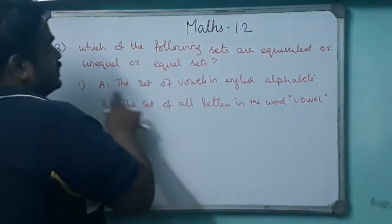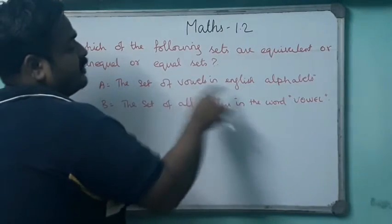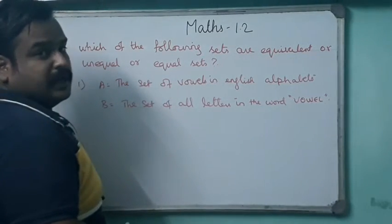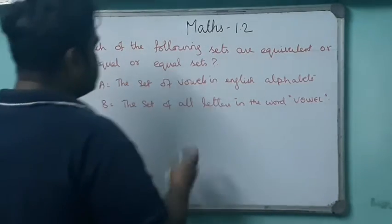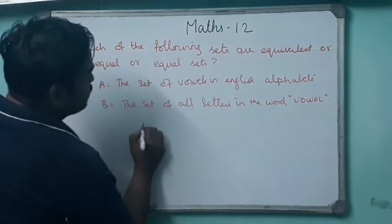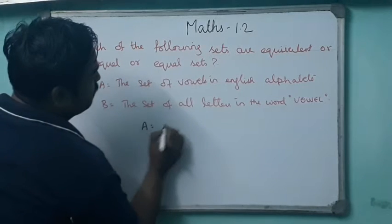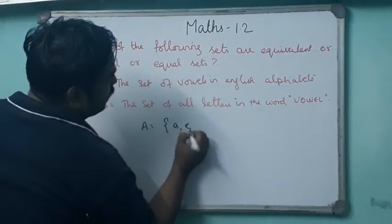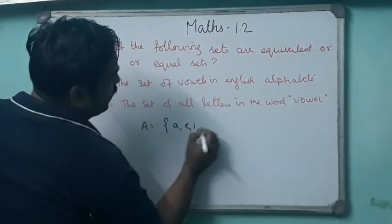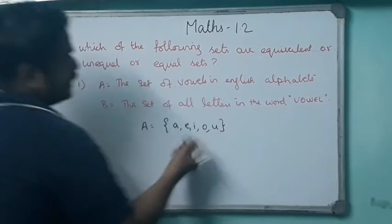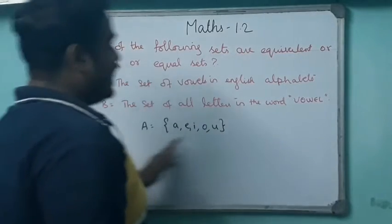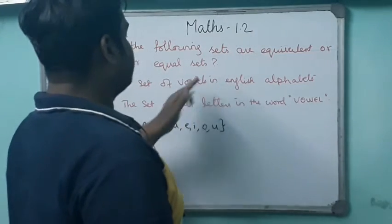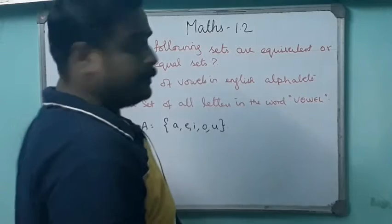Now listen to the question. Set A equals the set of vowels in English alphabets. The vowels in English alphabets are A, E, I, O, U. These are the letters in the English alphabet which are vowels.